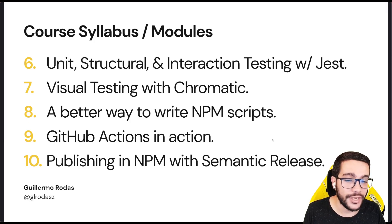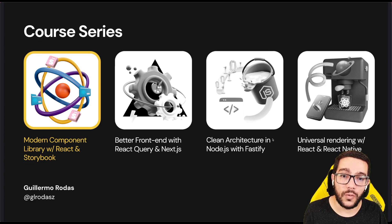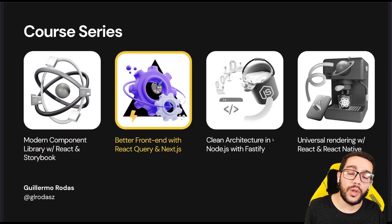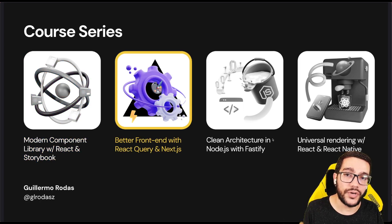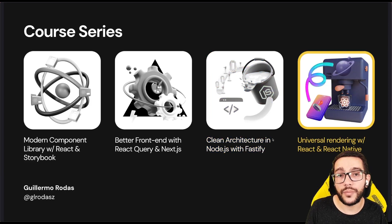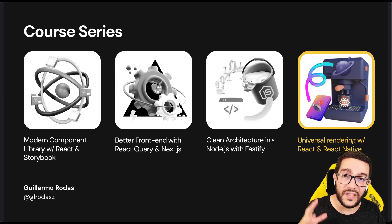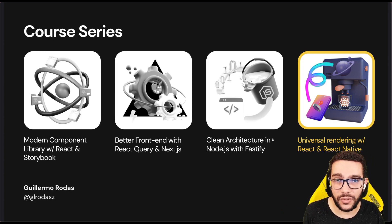As I said before, this is just one part of four courses — there is a lot of content and it's going to be a lot of fun because we are going to be working on the same project. We will start with this modern component library with React. Then we will check how to build a nice frontend using React Query and Next.js. Then we will work on the API using clean architecture with Fastify. And finally, we are going to build a mobile app using React Native using a concept called universal rendering, where components built in this course will render on the web or mobile depending on certain rules.